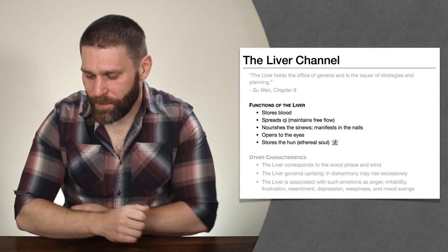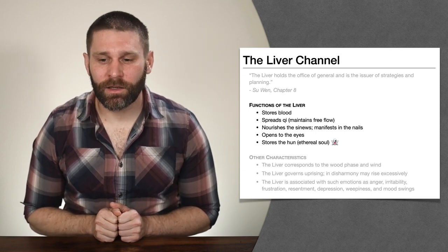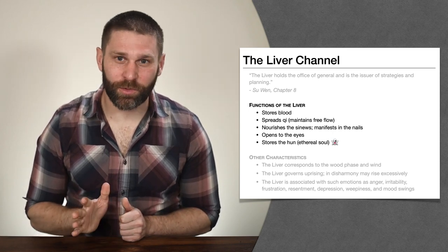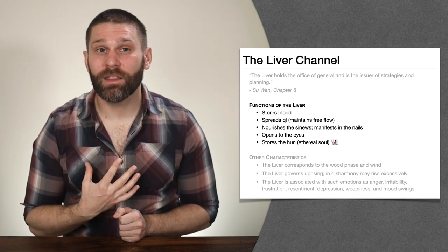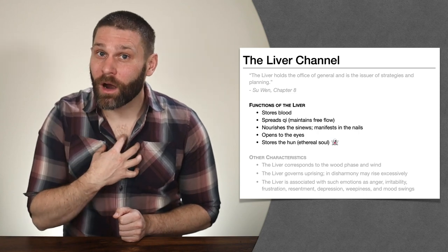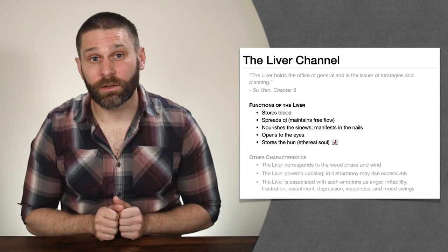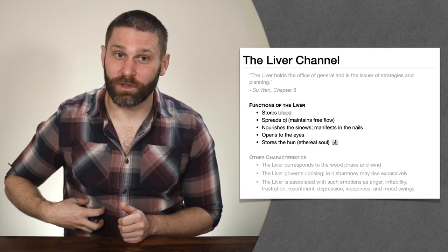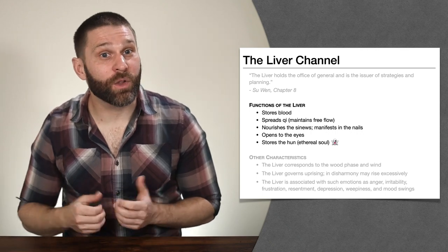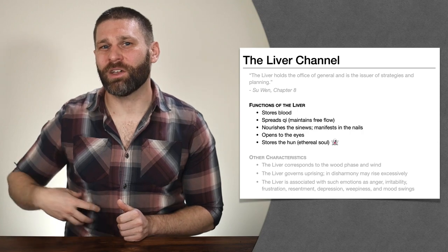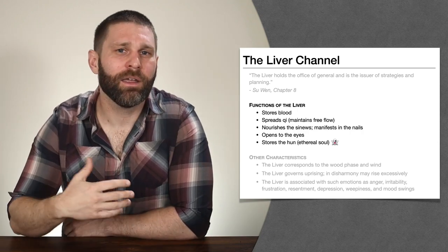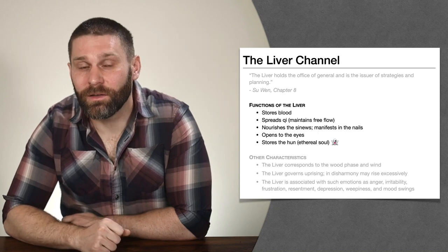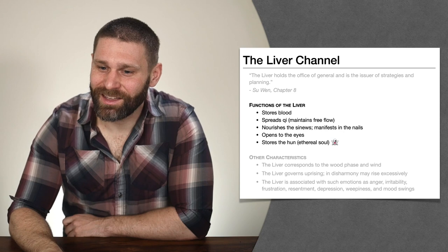Another aspect that comes up more practically in the clinic is that the Hun explains the liver's involvement in conditions like insomnia. Normally when we talk about insomnia, we're talking about the heart Shen — the Shen has to come home to the heart and be relaxed in order for us to fall asleep. Well, we have the same thing with the liver and the Hun: the Hun has to come home to the liver and be relaxed, otherwise we can't fall asleep. Sometimes if a person has trouble sleeping, their ethereal soul is out wandering around. This is a convenient way to explain why certain insomnia conditions we're going to treat the liver instead of the heart.